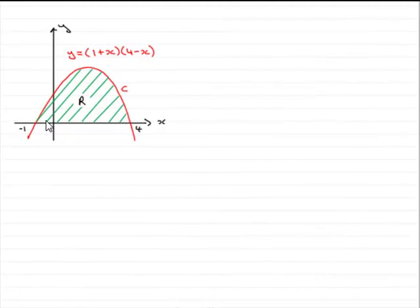Hi, on this question we've got to work out the area R, that's this green area, between x equals minus 1 and x equals 4. So how do we do this? Well, it's basically an integration problem.